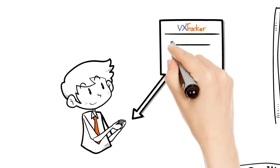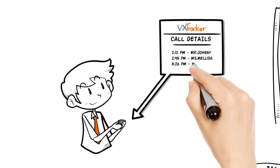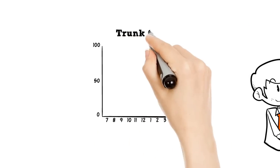First, Jeffrey runs VX Tracker and uses call detail records in his phone system to determine the current trunk traffic of Wadecom.